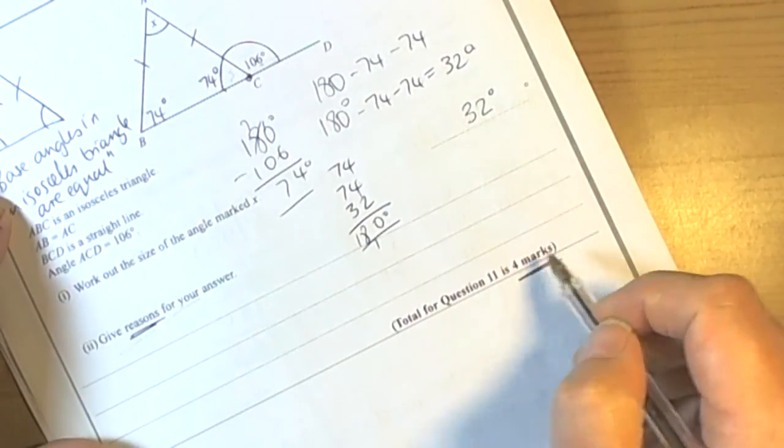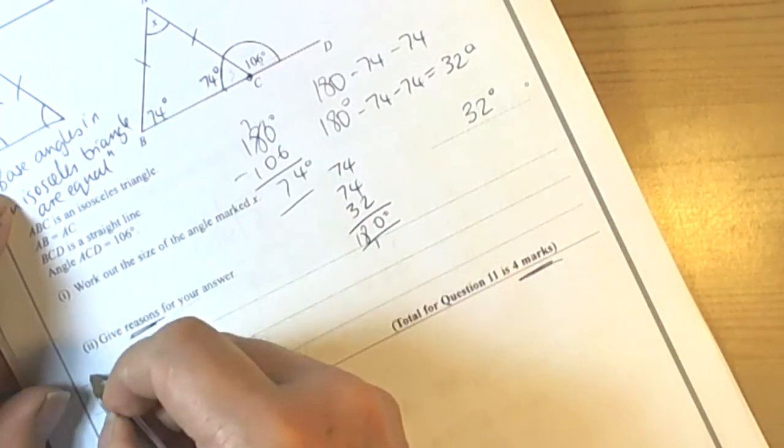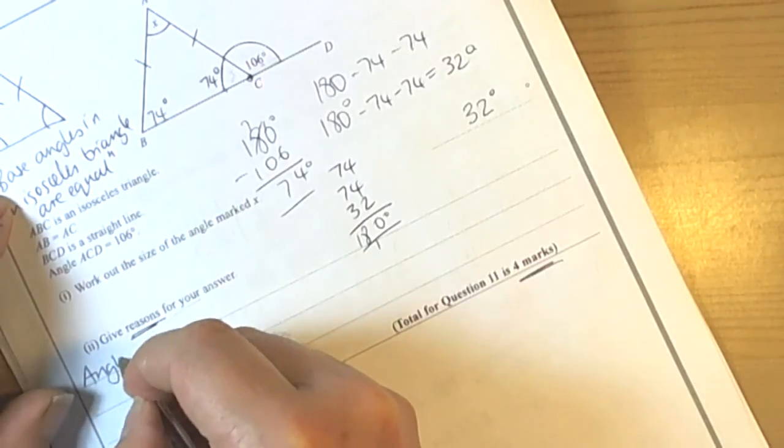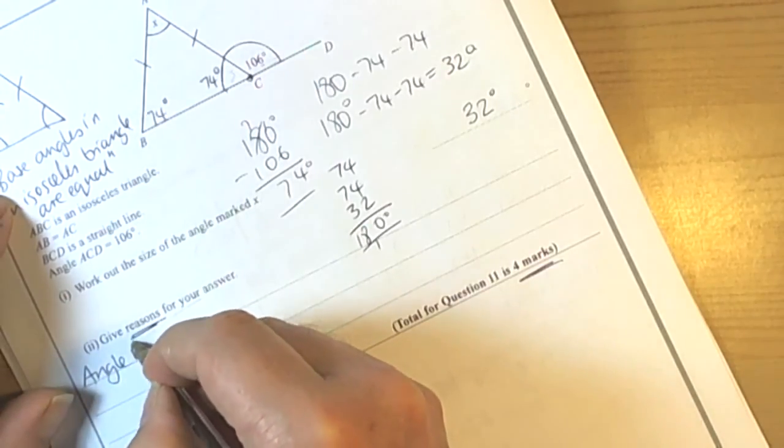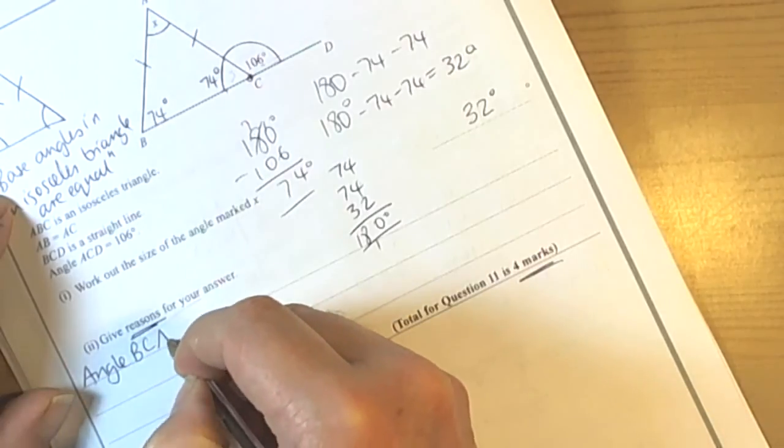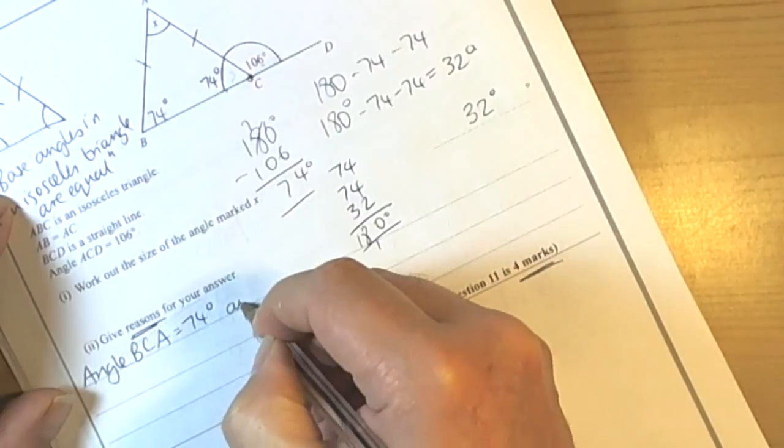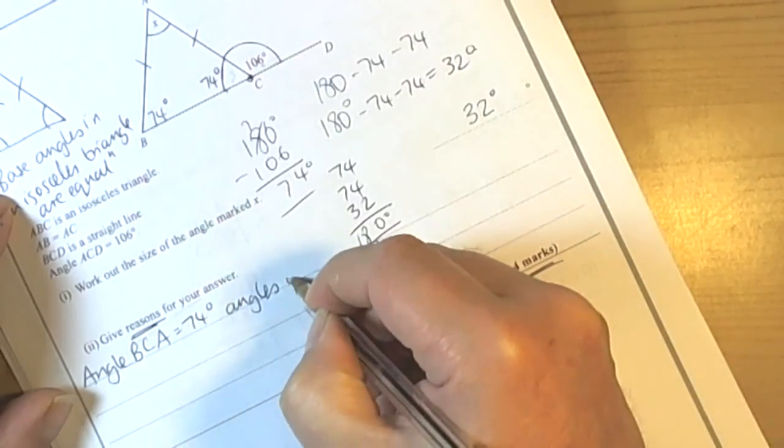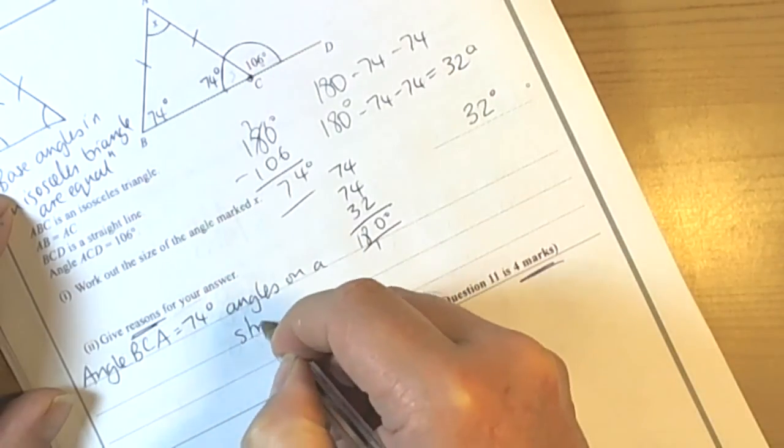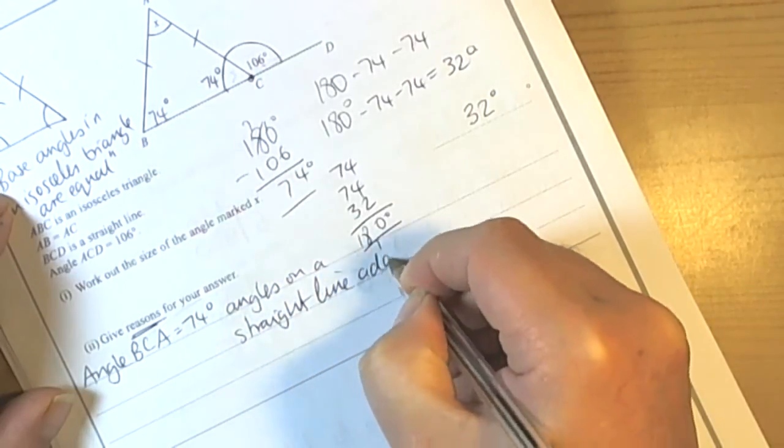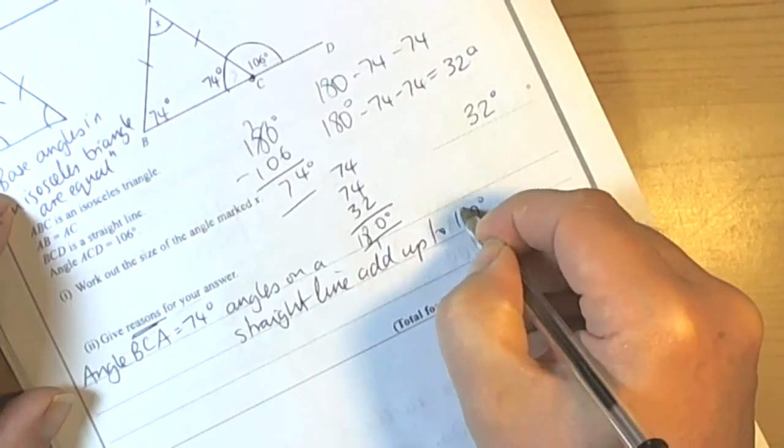It's worth 4 marks this question, so we really ought to be writing down all the reasons. So the first reason is angle BCA equals 74 degrees. Angles on a straight line add up to 180 degrees.